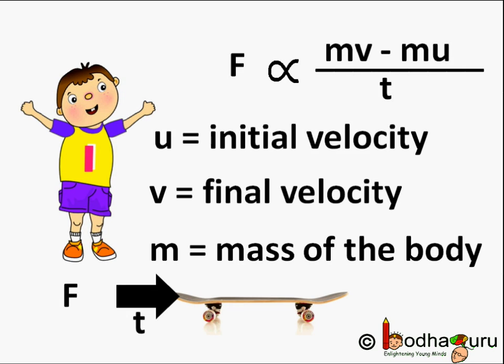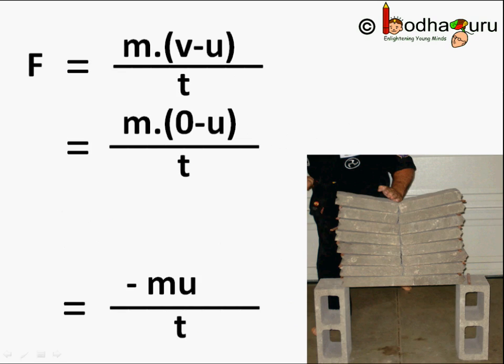So, when the karate player gives a karate chop, he hits the slab very fast. So, if you see, the momentum of hand changes to zero very fast as v becomes zero.